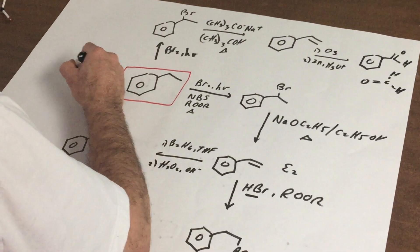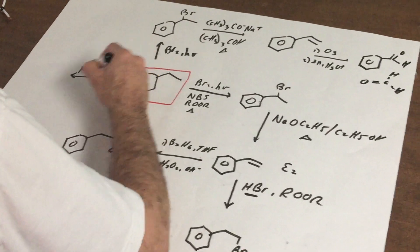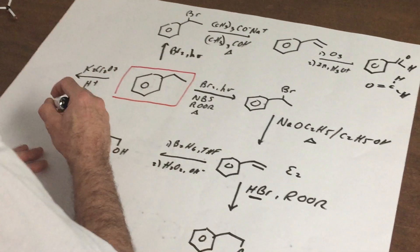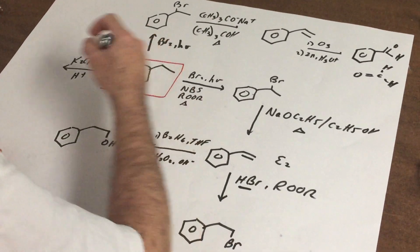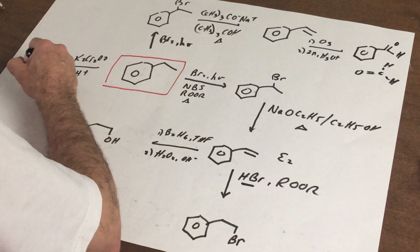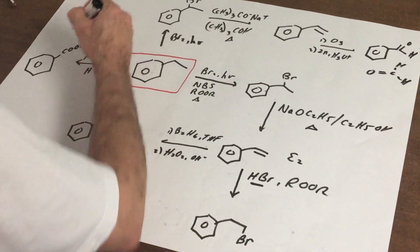Next, what I can do is, I can oxidize this with potassium dichromate and acid, or I could have used KMnO4, and that's going to oxidize the entire side chain off. And that would give me a benzoic acid.